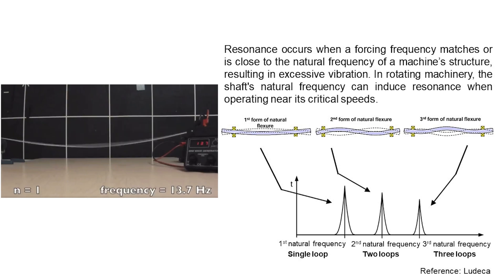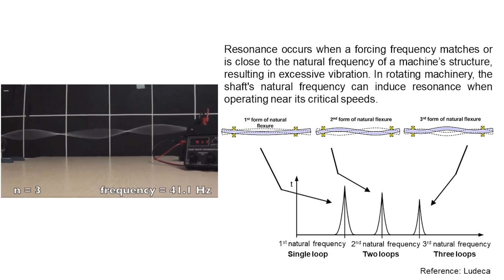Resonance occurs when a forcing frequency matches or is close to the natural frequency of the machine structure, resulting in excessive vibration. In rotating machinery, the shaft natural frequency can induce resonance when operating near its critical speeds.